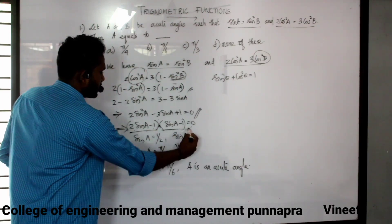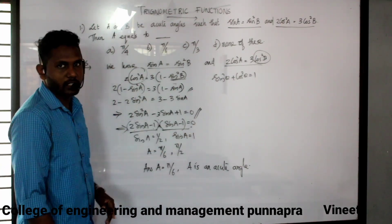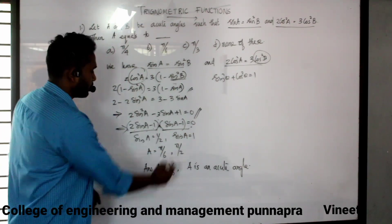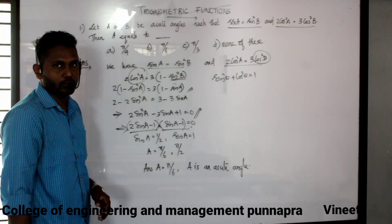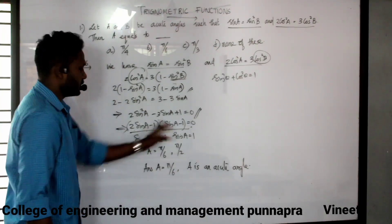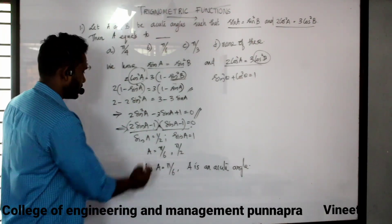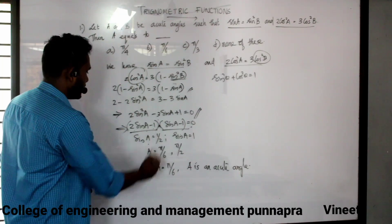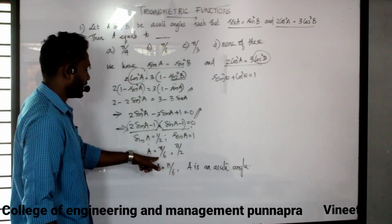We put sin a minus 1 is equal to 0, giving sin a is equal to 1. We write the two equations in complete form: sin a equals 1/2 or sin a equals 1.